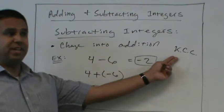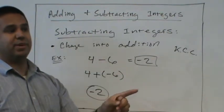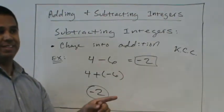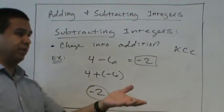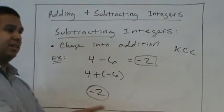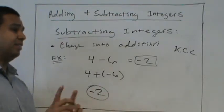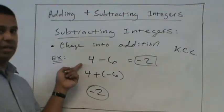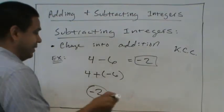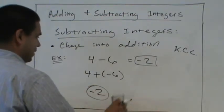We could do keep change change on every subtraction problem. And we want to change it to addition, and then the rules for addition we already know. Same sign, add and keep the sign. Different signs, subtract, keep the larger. And I showed you another method. I call it my box method.